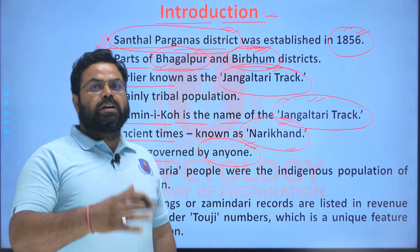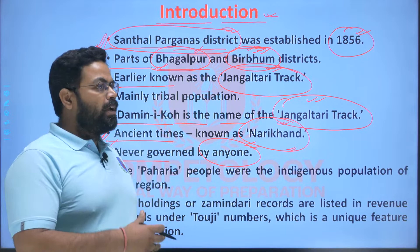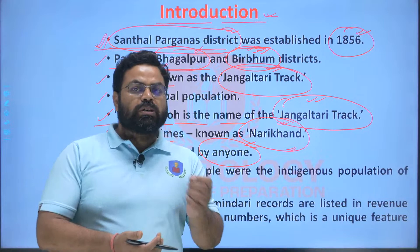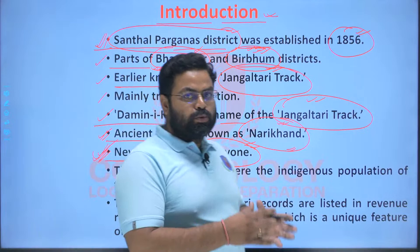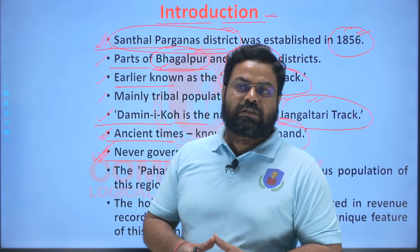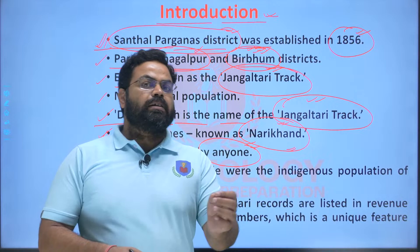For that reason, the Britishers made Santhal Pargana a separate non-regulation district where mainly martial law type conditions prevailed. The police administration was more restricted in this region to suppress any kind of revolt or uprising. But along with that, the Britishers were of the view that to rule this region they needed to incorporate some changes in the administrative system. One basic reason for the discontent among the tribals was land-related issues and land revenue related issues, because of which the tribals were revolting again and again.